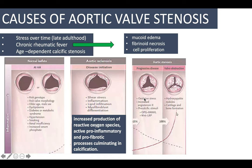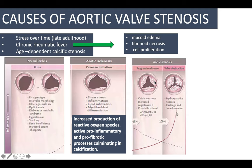As the disease progresses, there is increased oxidative stress and elevated angiotensin II levels — relevant in hypertension, since angiotensin II raises blood pressure and is associated with increased risk of aortic stenosis. Additionally, OPG, RANKL, and pro-calcific stimulatory pathways — related to osteoblast and osteoclast activity — and the Wnt/LRP pathway are implicated. The valve eventually shows hydroxyapatite nodules, calcified plaques, and even cartilage and bone formation.